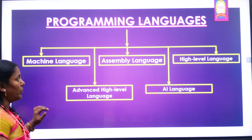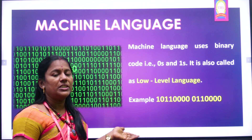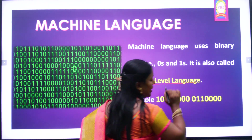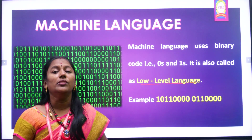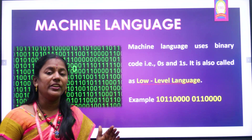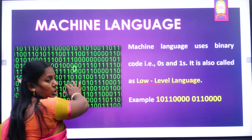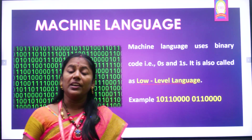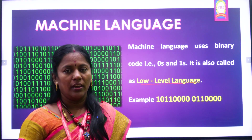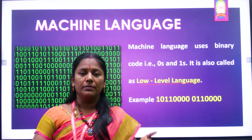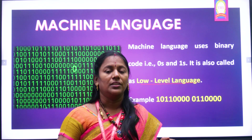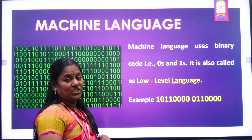First, we are going to see about machine language. Machine language is also called low level language. It uses binary codes 0 and 1. The whole program will be written only using 0 and 1. Think whether it will be easy to read a book written only using 0 and 1 — it is a very difficult task. Similarly, writing a program using 0 and 1 is very difficult for users. So the next step evolved.